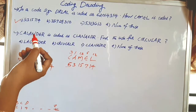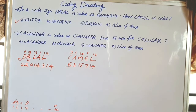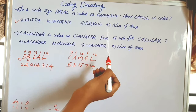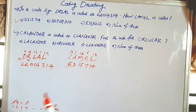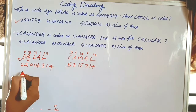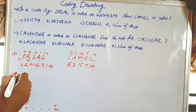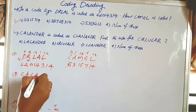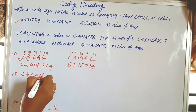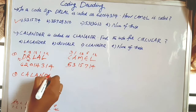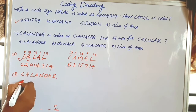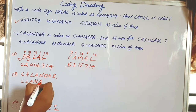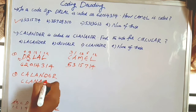Now the next question: CALENDAR is coded as CLANAEDER. Find the code for CIRCULAR. This is the second question — CALENDAR (C-A-L-A-N-D-E-R) is coded as CLANAEDER, and this is not direct coding.